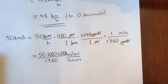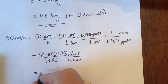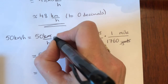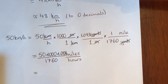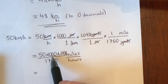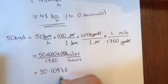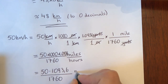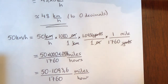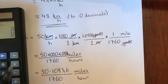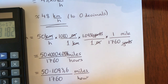Let's rewrite that more clearly: 1000 times 1.0936 — noting that in Sweden a dot is used for multiplication instead of the times sign — which gives 50 times 1093.6 divided by 1760 miles per hour. Calculating that: 50 times 1093.6 divided by 1760 gives 31.07 miles per hour.